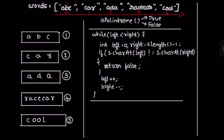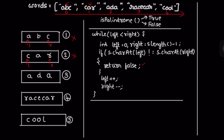Starting with the first word 'abc', this is passed to the isPalindrome helper function. The left pointer points at 'a' and the right pointer points at 'c'. It checks if the character at left is not equal to the character at right — 'a' is not equal to 'c', so it returns false. 'abc' is not a palindrome. Moving to the second word 'car', left points at 'c' and right points at 'r' — they are not equal, so it is not a palindrome either.